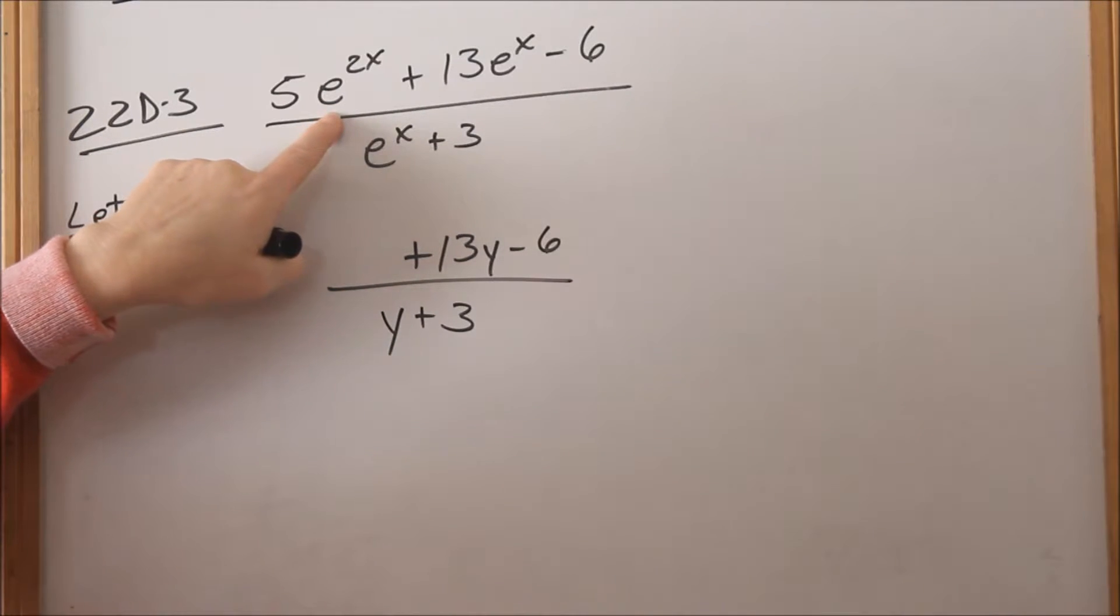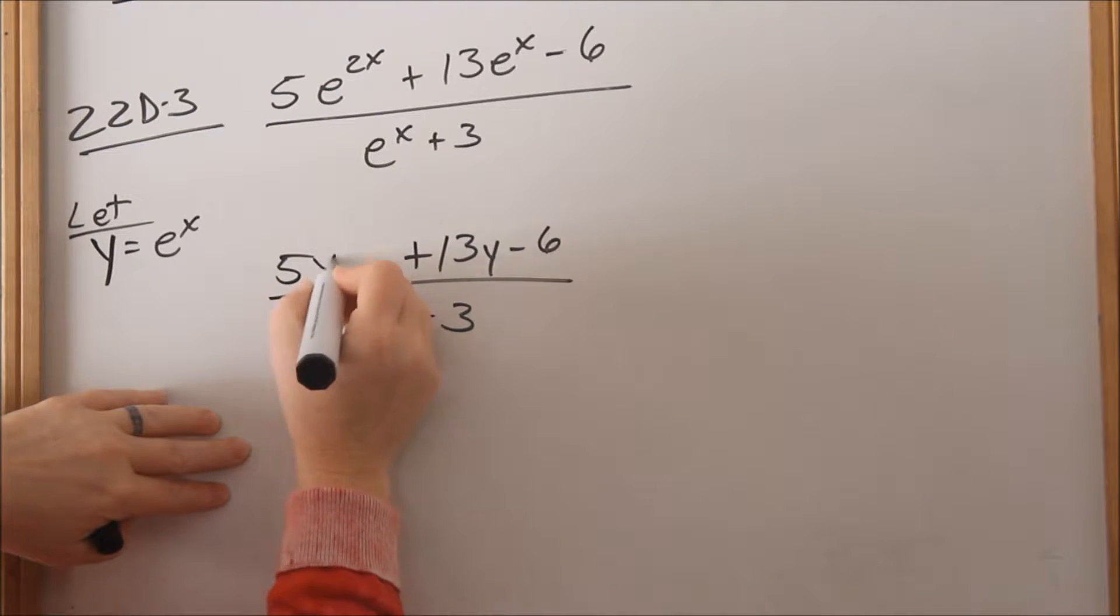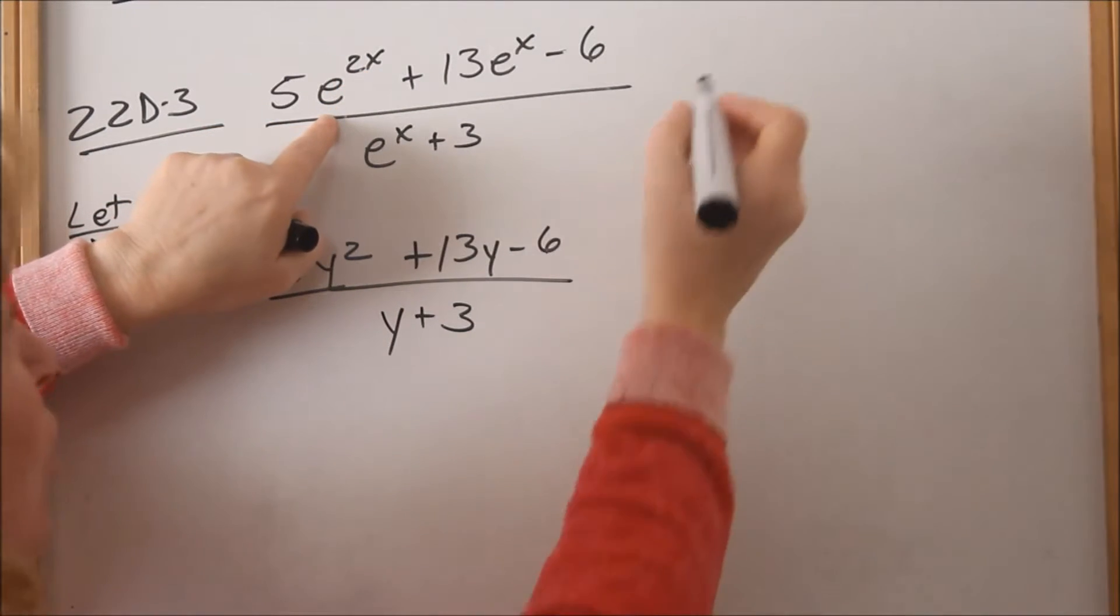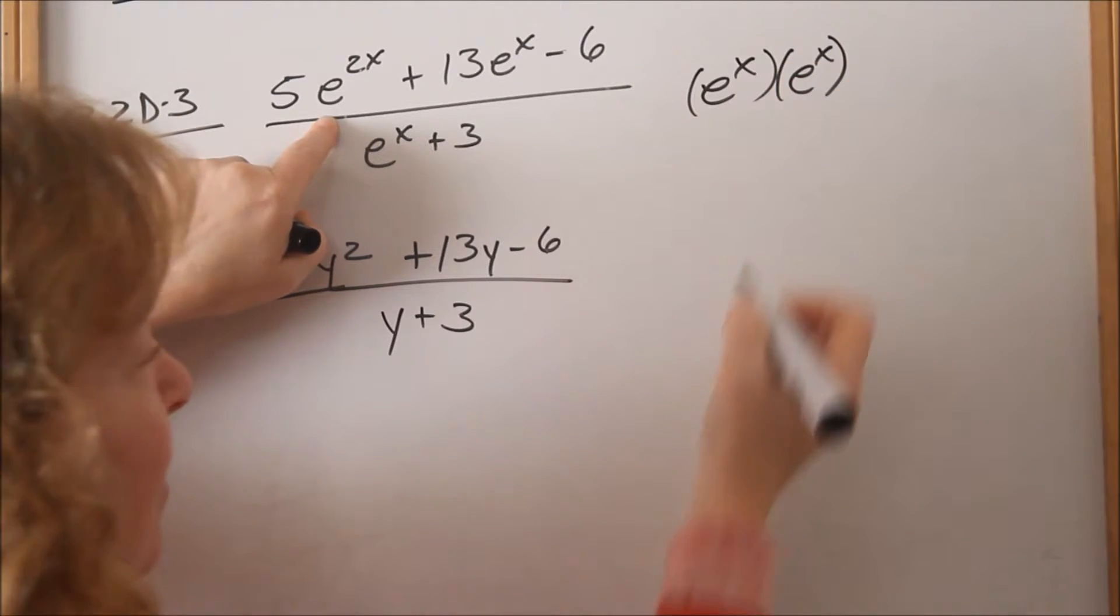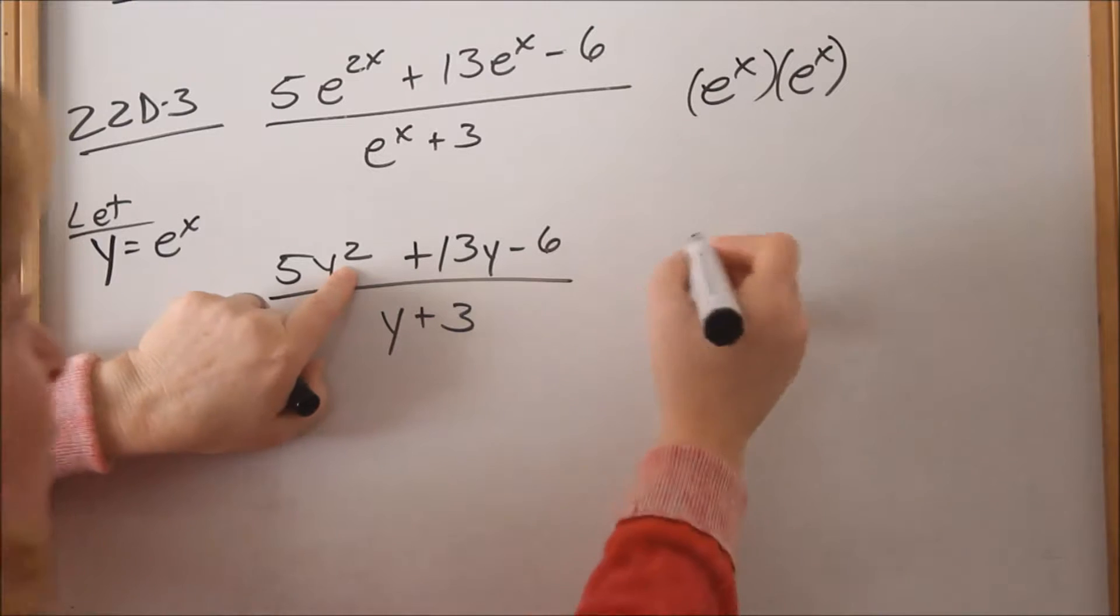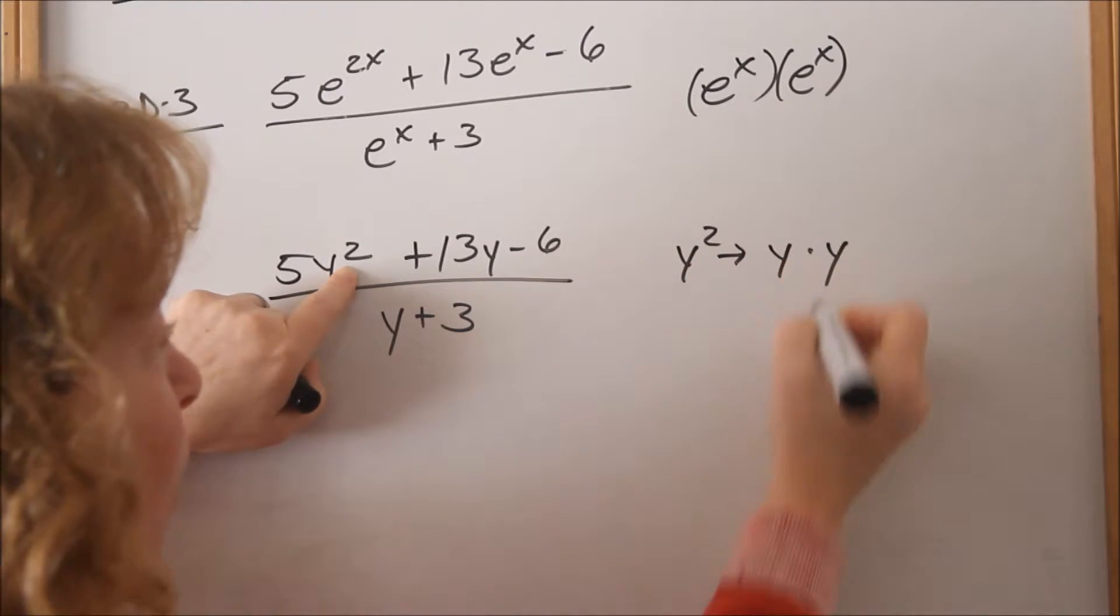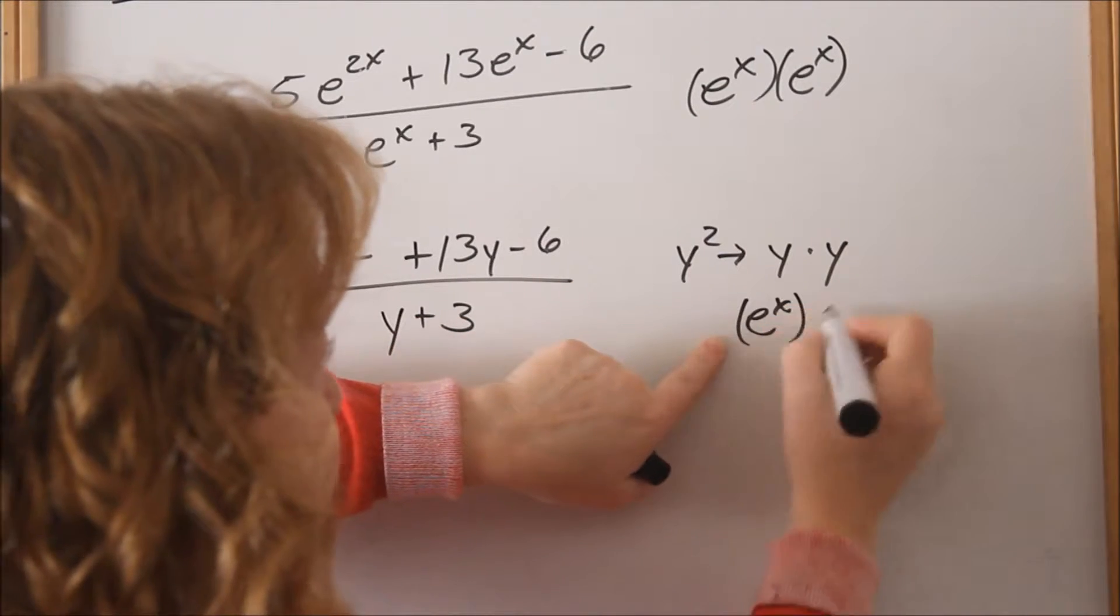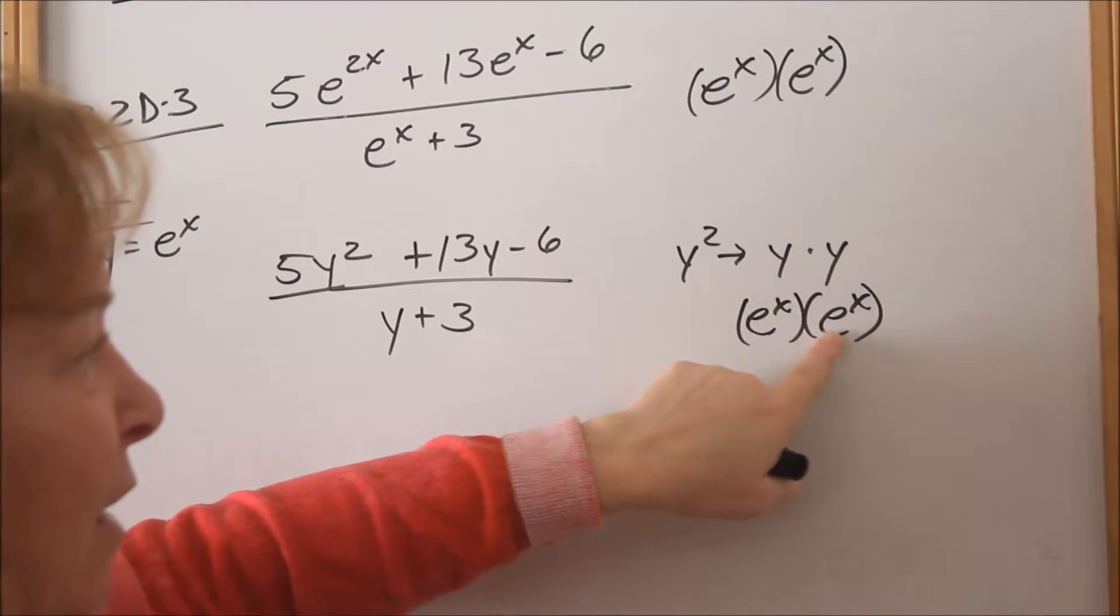Now, what is that one going to be? That will be 5y^2, because that's e^(2x). To show you: e^x times e^x, because squared, y^2 implies y times y. In our case, each y equals e^x, so y^2 equals e^x times e^x.